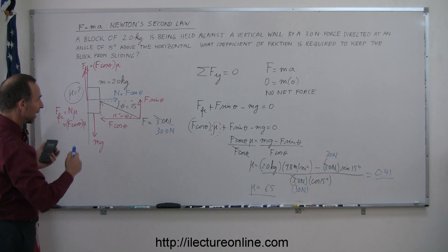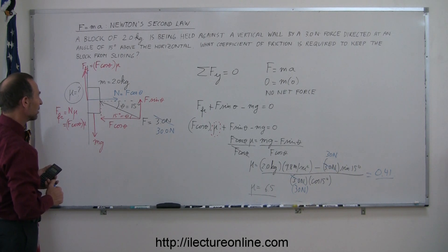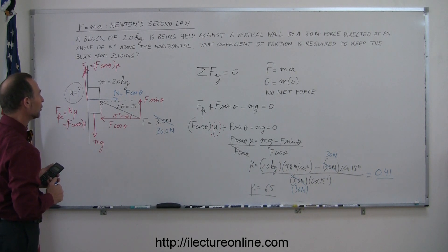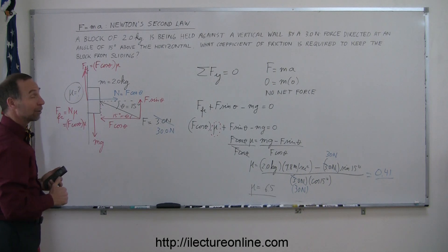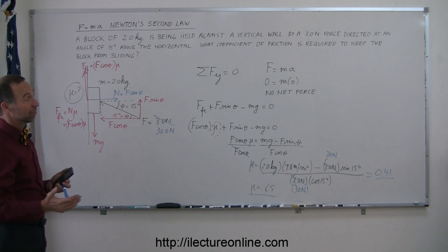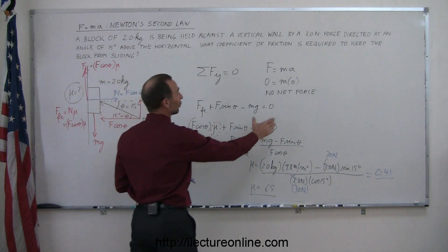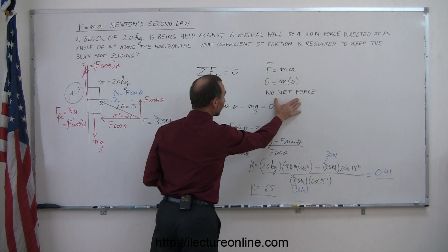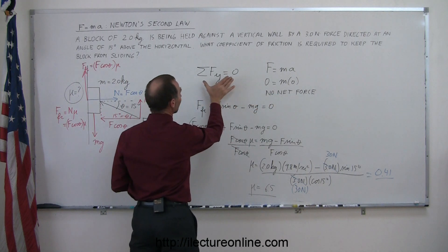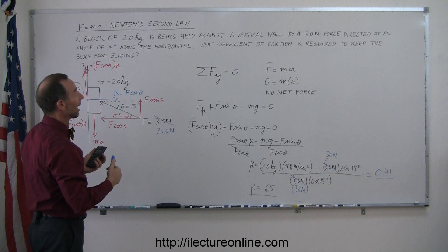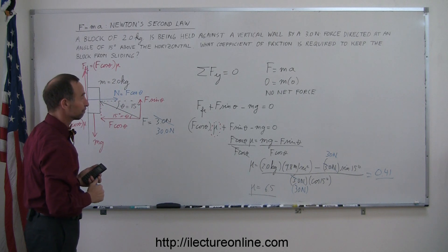This illustrates another way of applying Newton's second law. In this case, we don't have an acceleration, so there is no net force, which means the sum of the forces in the direction where we expect acceleration must add up to zero.